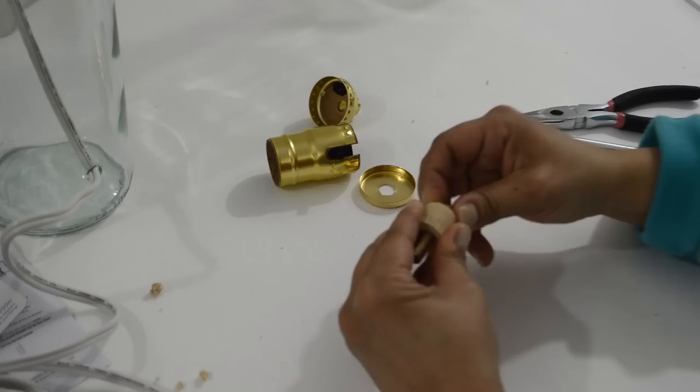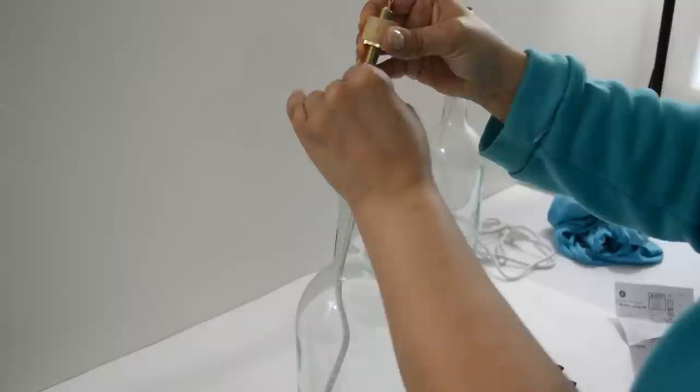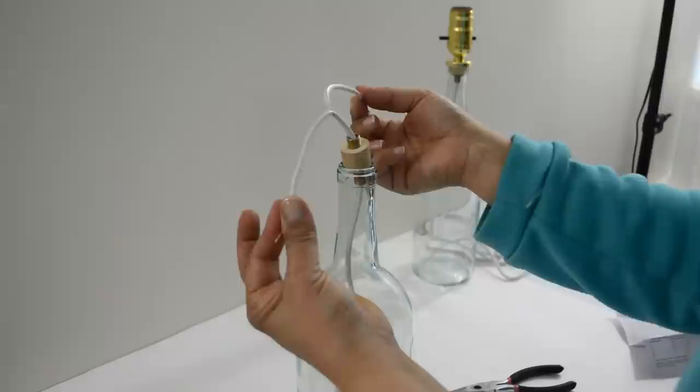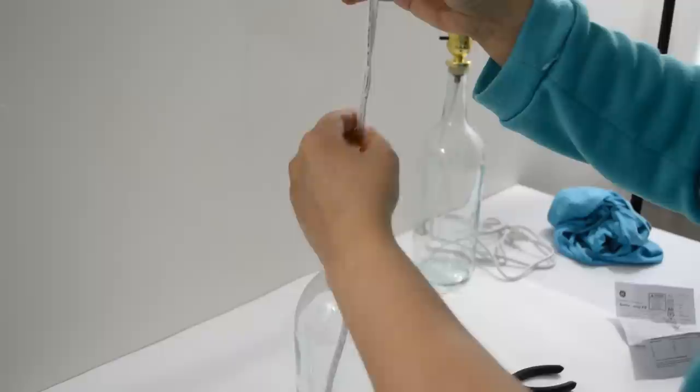Split the cord in half after you put everything through. I have a tendency of getting ahead of myself and that's why you see the cord already split. Put the wires through the lamp nipple, making sure the lock nut is on the bottom. Next, put the check ring through and then the socket cap.